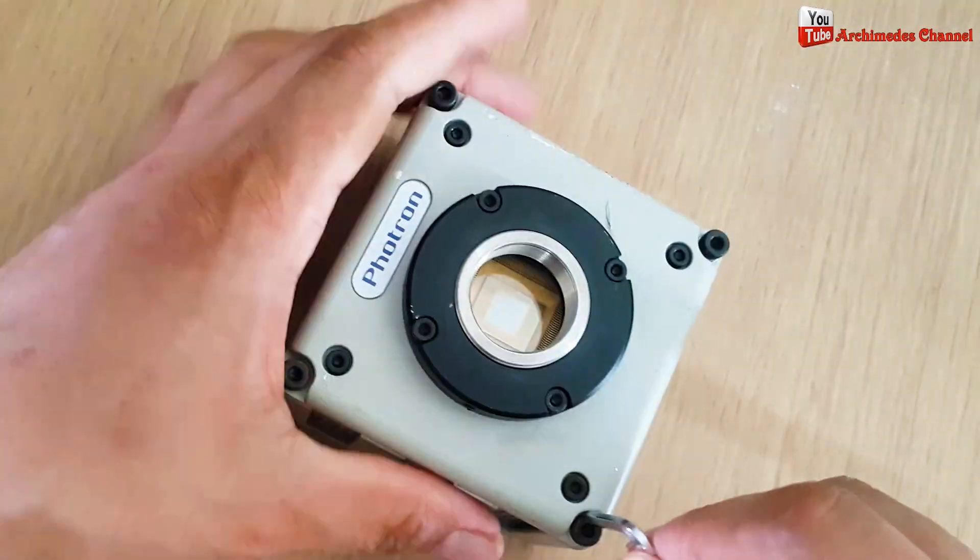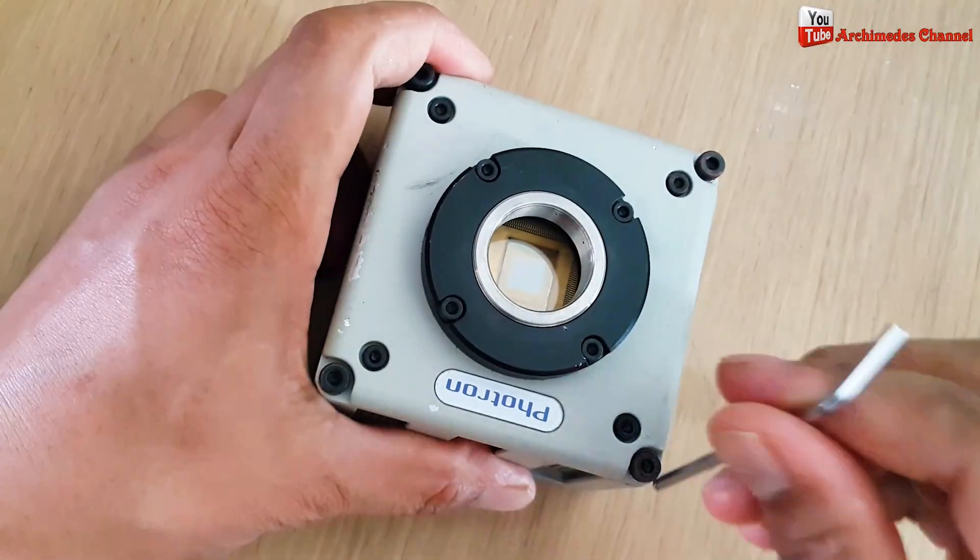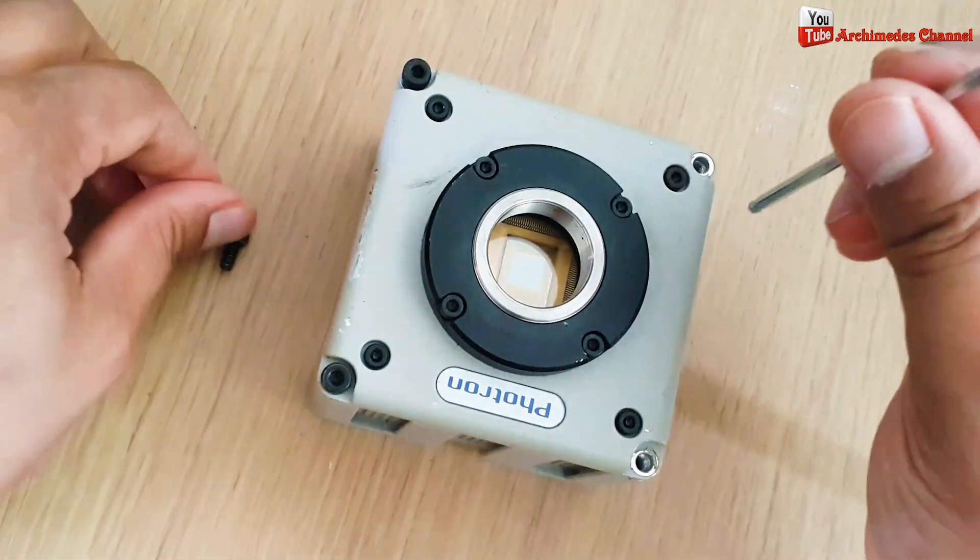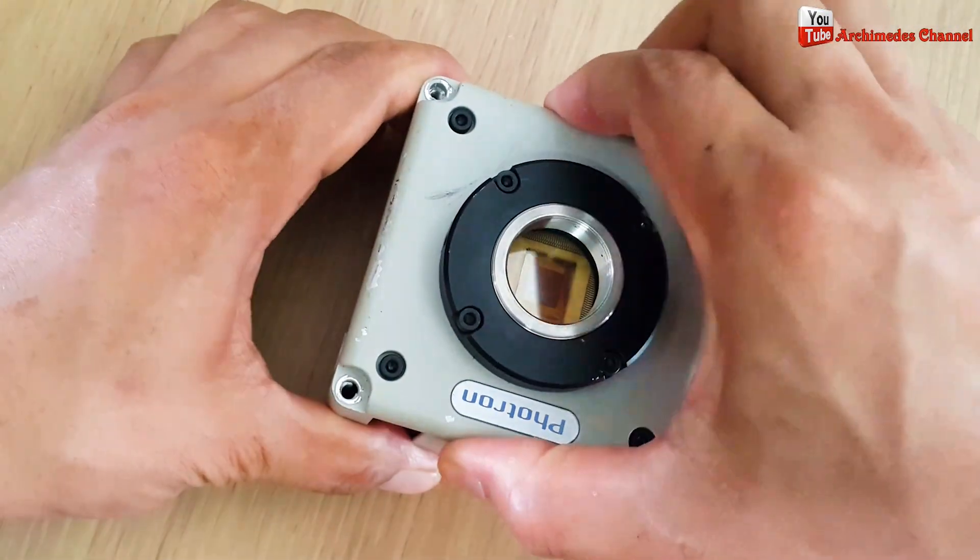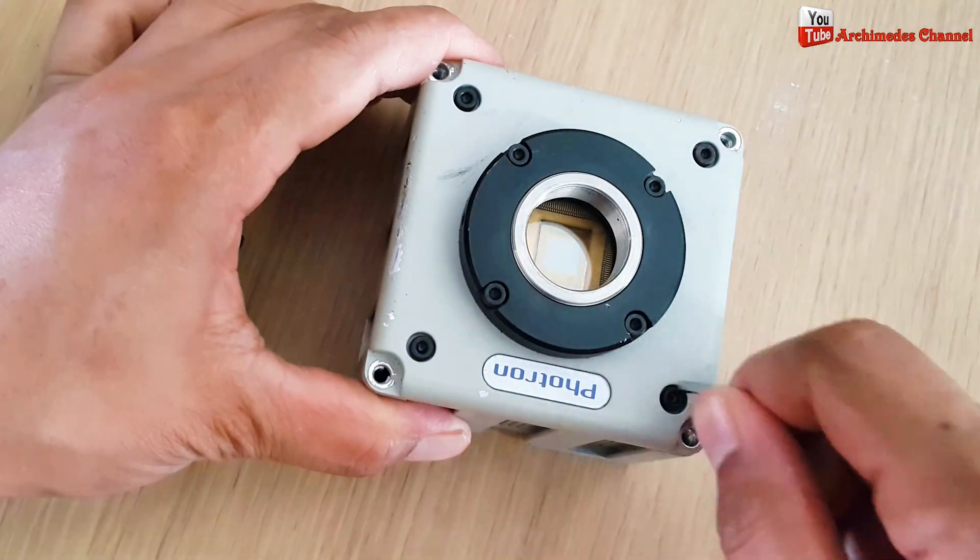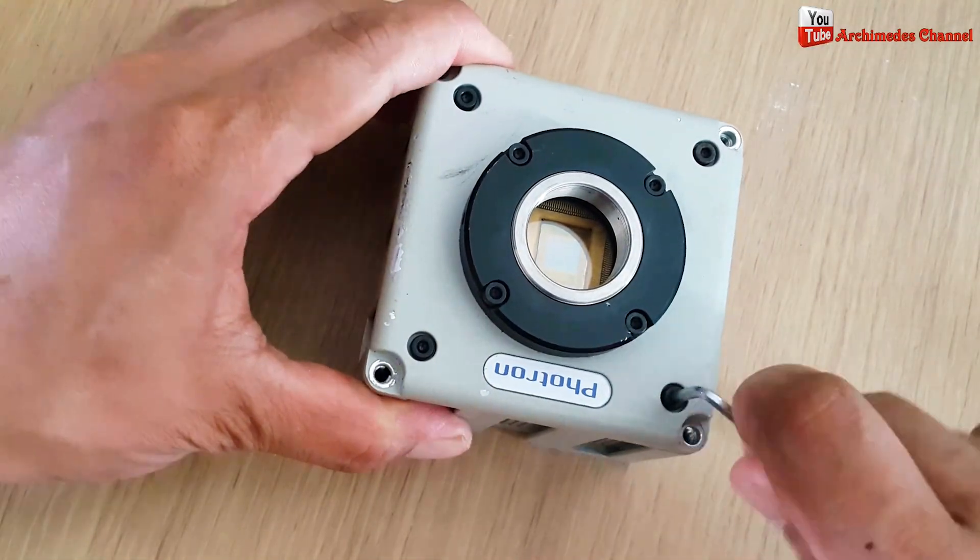To recover gold from a CCD camera, you will need to disassemble the camera and extract the CCD sensor. The sensor will likely be attached to a PCB, which contains a small amount of gold in the connectors and traces.